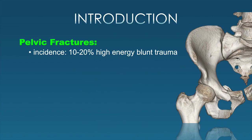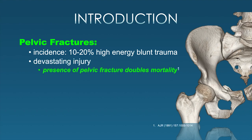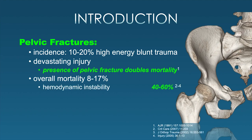Pelvic fractures are seen in about 10 to 20 percent of high energy blunt trauma. It's a devastating injury. The presence of a pelvic ring fracture will double the mortality of whatever else is going on with these patients. Overall mortality can be as high as 17 percent. However, if the patient presents hemodynamically unstable with a pelvic fracture, that mortality moves up to between 40 and 60 percent. Even worse if it's an open pelvic fracture—meaning there's no tamponade ability by putting the patient in a pelvic binder—that mortality goes up to 70 percent.